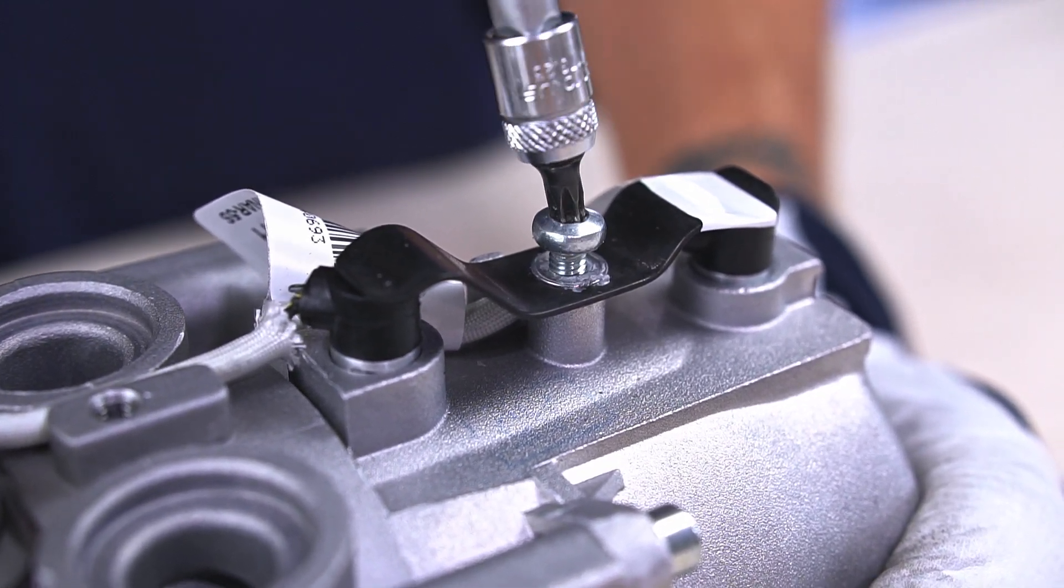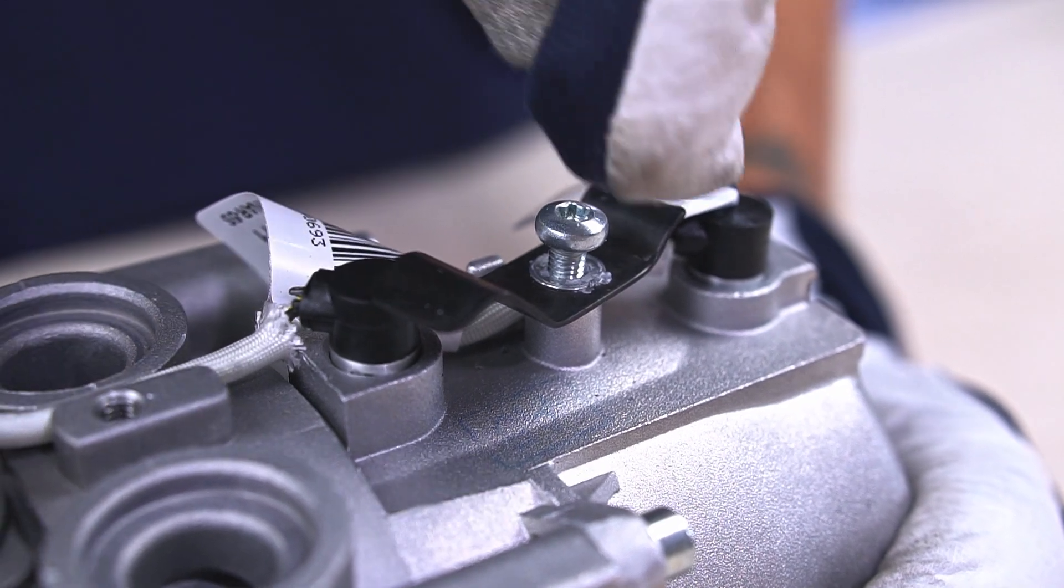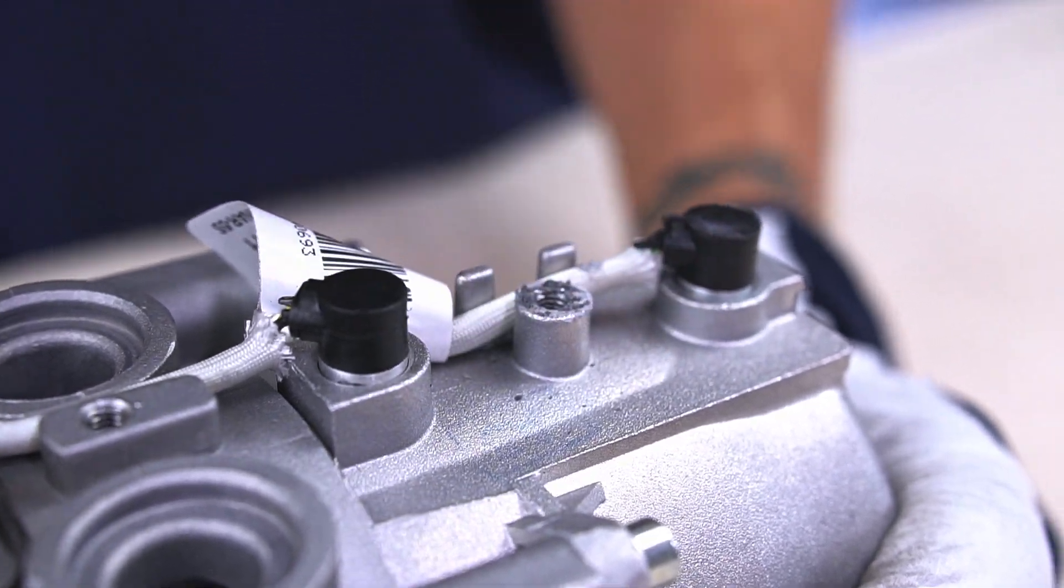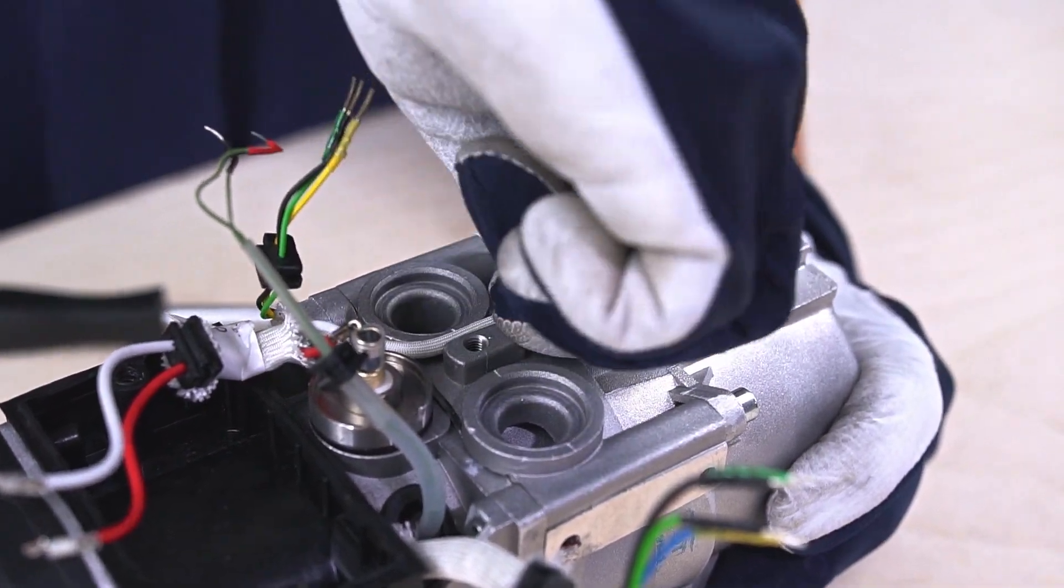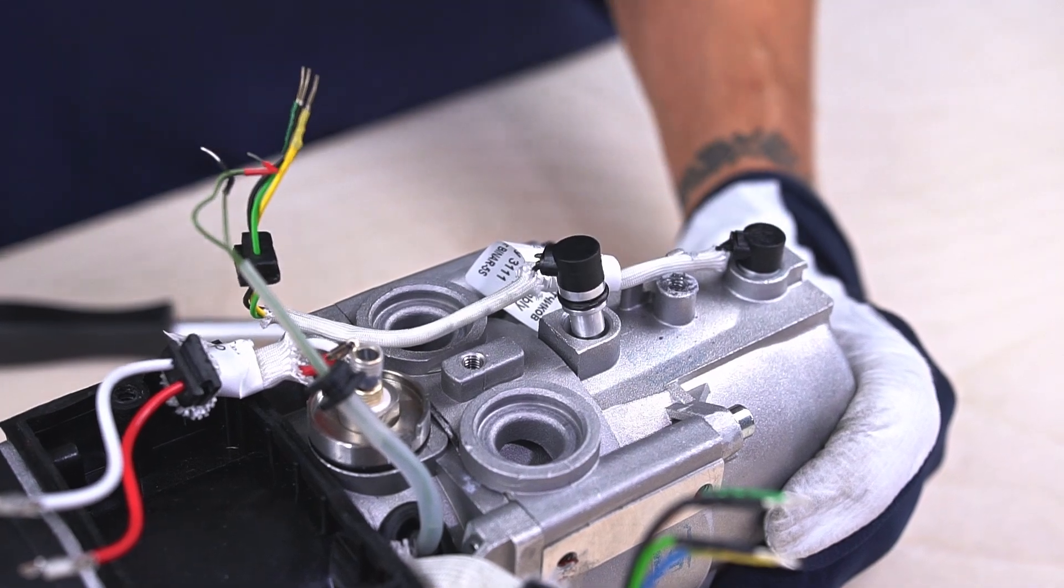When reassembling the heater, it's important to remember the position of this clamp. Higher side to the air pump side. Slowly remove the temperature sensors by rotating them forwards and backwards.